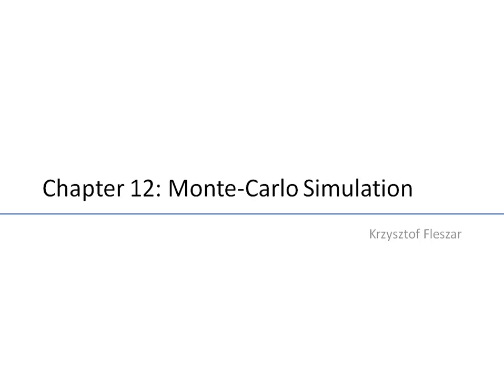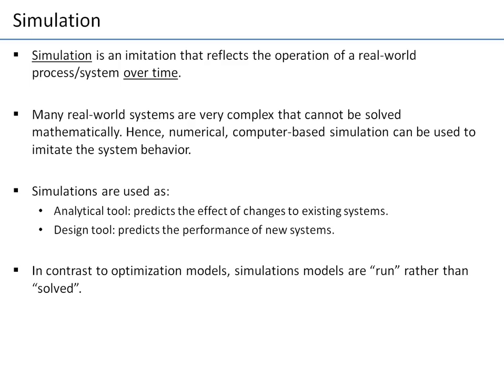Chapter 12 is about Monte Carlo simulation. A simulation is an imitation that reflects the operation of a real-world process or system over time. In a sense it is a model — we simulate something, model its performance over time, considering multiple days, weeks, hours, or minutes. Many real-world systems have to be simulated because there are no simple models that can solve them.